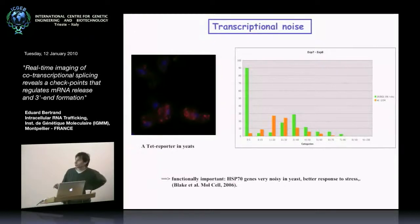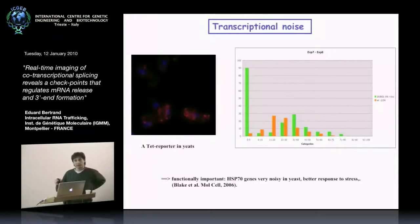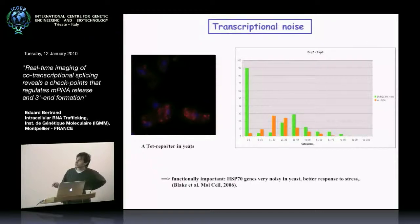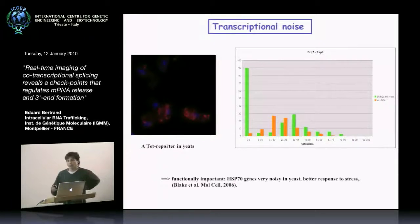A paper published a few years ago showed for HSP70 genes in yeast that these genes are very noisy — you get a lot of variation in expression on a cell-to-cell basis. They showed that this is very important for the function of the gene: having a noisy gene can give you a better response to stress and better survival in the population.